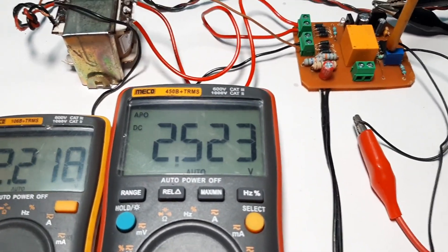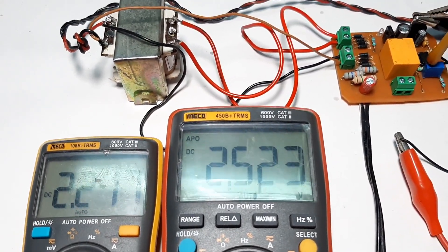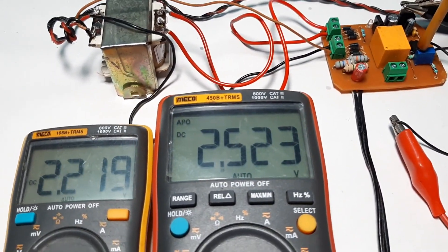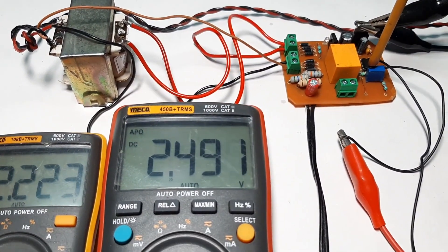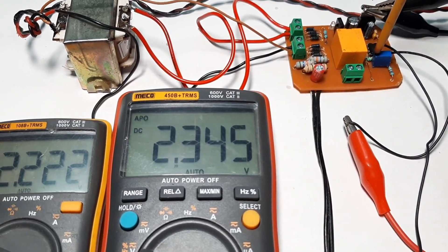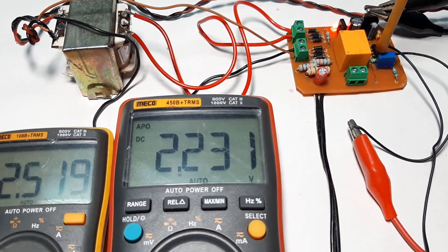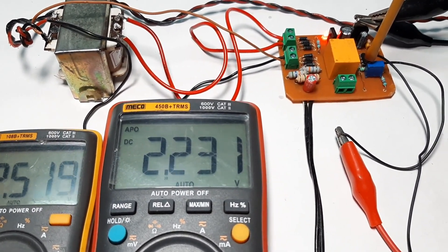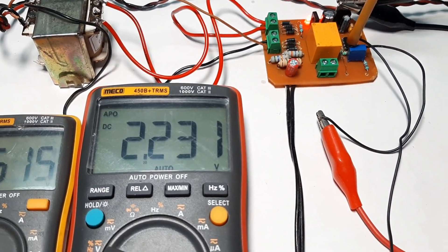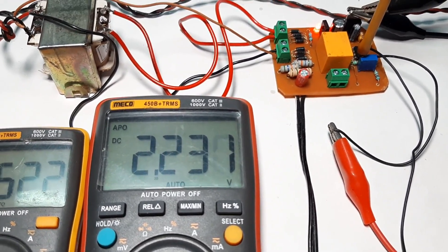Due to the hysteresis, there is a difference between the two triggered voltage levels. Let me show you again. Okay, the op-amp just triggered when the input voltage reached below 2.2 volts, and it will trigger again when the input voltage reaches 2.5 volts.